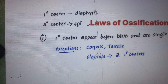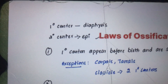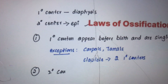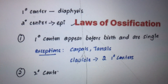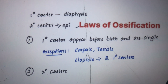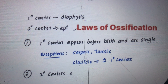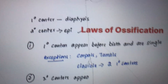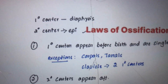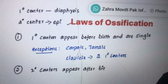The second rule states that secondary centers of ossification appear after birth as a rule.